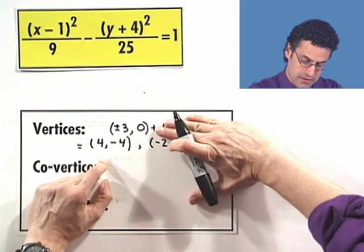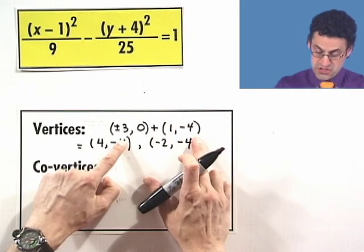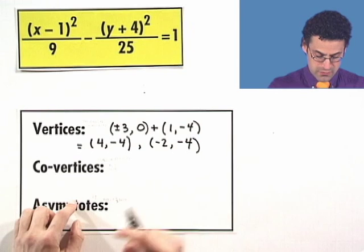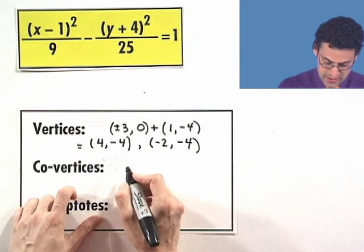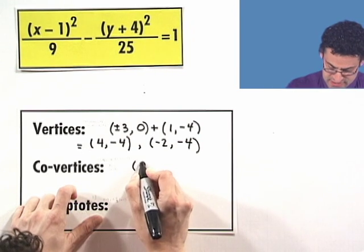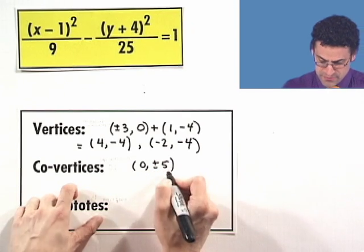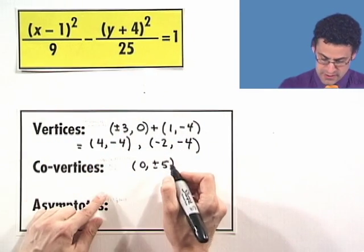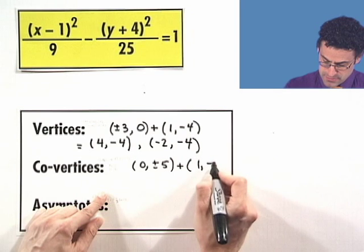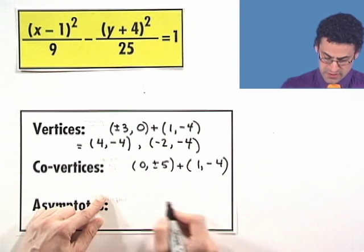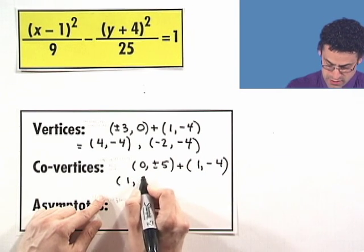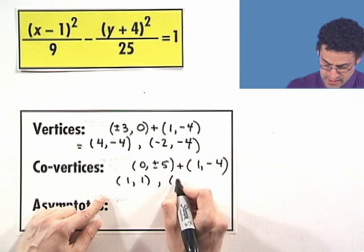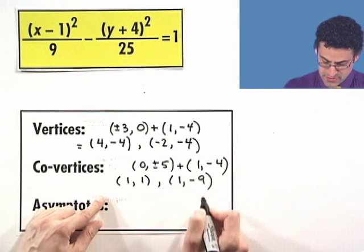What about the co-vertices? The exact same thing here. I take 0 plus or minus 5, that's the square root of the 25, and now I just shift it to the new center. And so what I see here is 1 comma 1 and 1 comma negative 9.